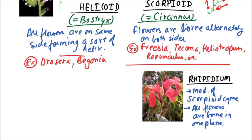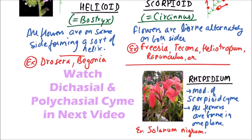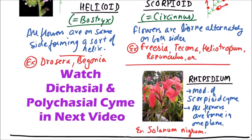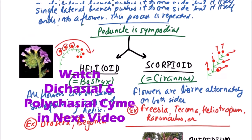The examples include Solanum nigrum. So this is the uniparous or monochaseal cyme.